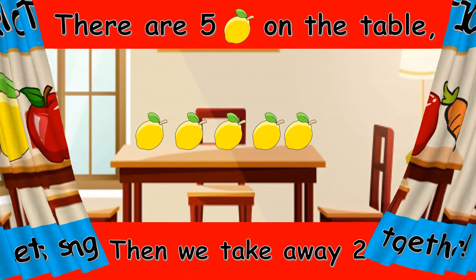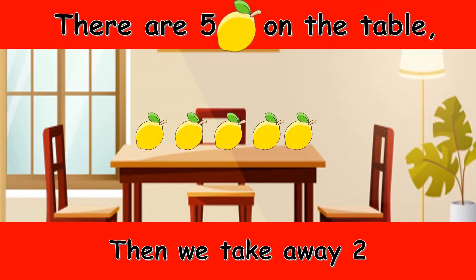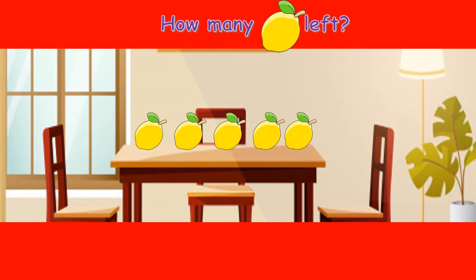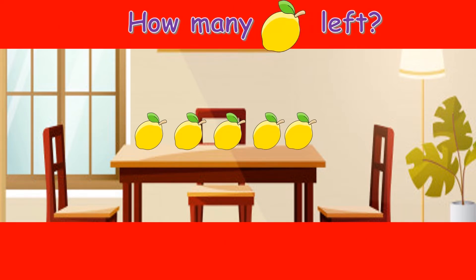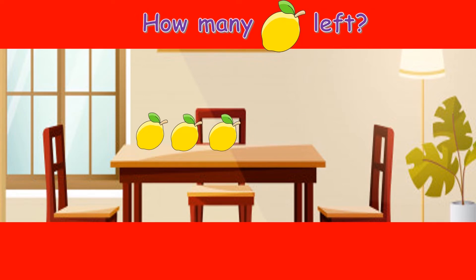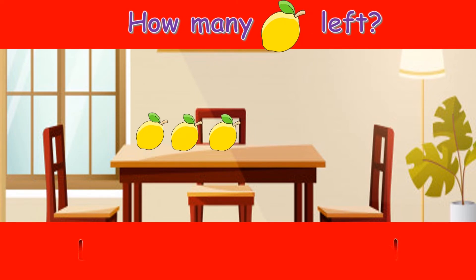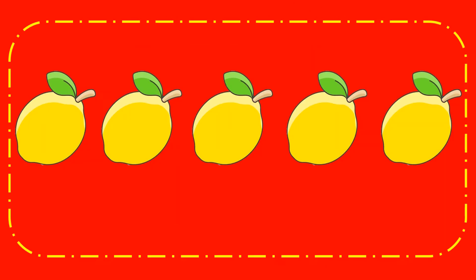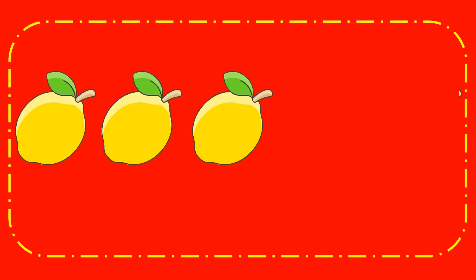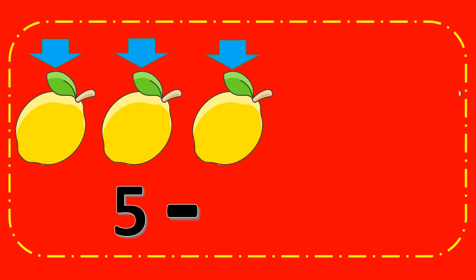There are 5 lemons on the table and we take away 2. How many lemons left? Let's count them together. 5 lemons take away 2 lemons equals 3. 5 minus 2 equals 3.